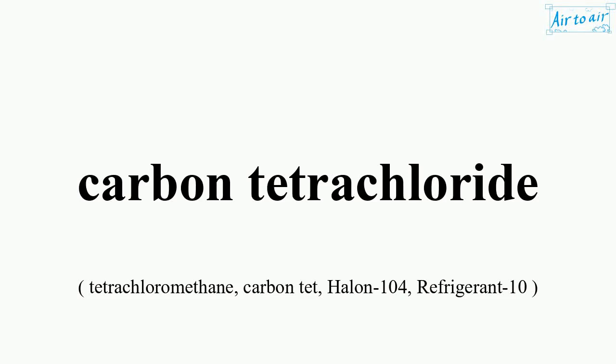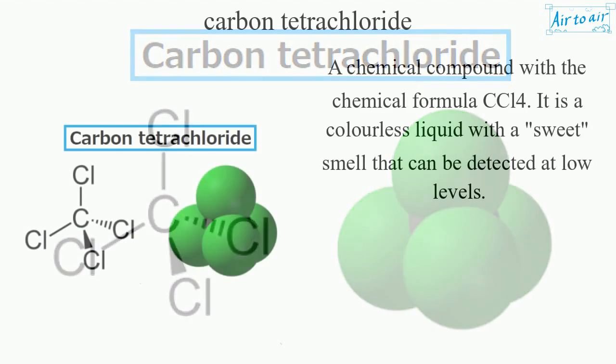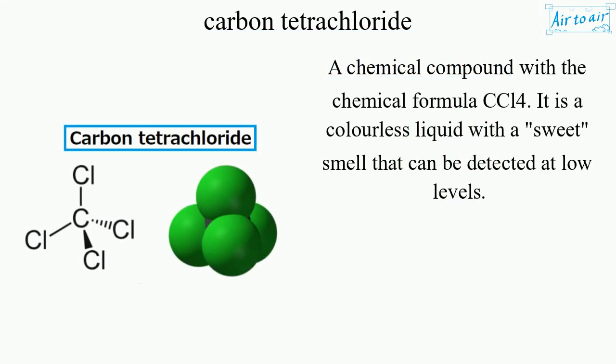Carbon tetrachloride is a chemical compound with the chemical formula CCl4. It is a colorless liquid with a sweet smell that can be detected at low levels.